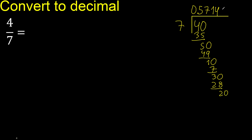7 multiplied by 4 — subtract, complete. 20. 7 multiplied by 2 is 14, subtract. Complete: 60. 7 multiplied by 8.